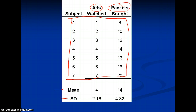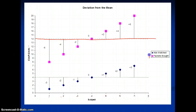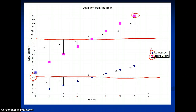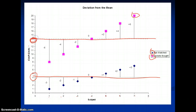We got the mean and the standard deviation for each of these variables — variable x (ads watched) and variable y (packets bought). If we plot out the deviations from the mean, we've got subjects on one axis, and we've got the ads and the packets on different mean lines. The mean for ads watched is 4, and the mean for packets bought is 14.